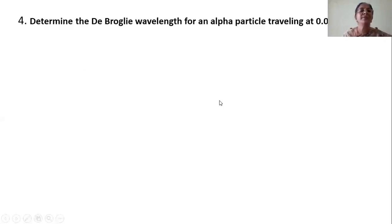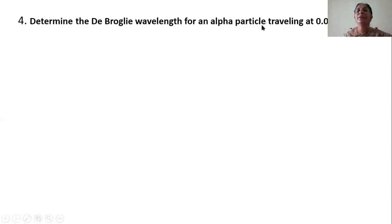With these concepts, let us do some problems. Determine the De Broglie wavelength for an alpha particle traveling at 0.015 times the velocity of light.